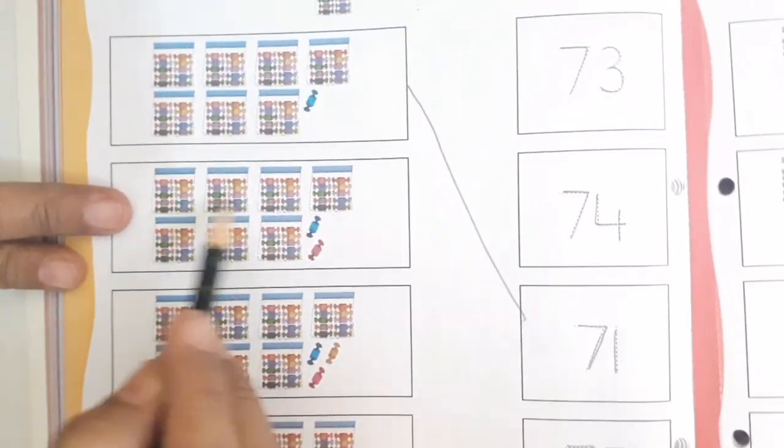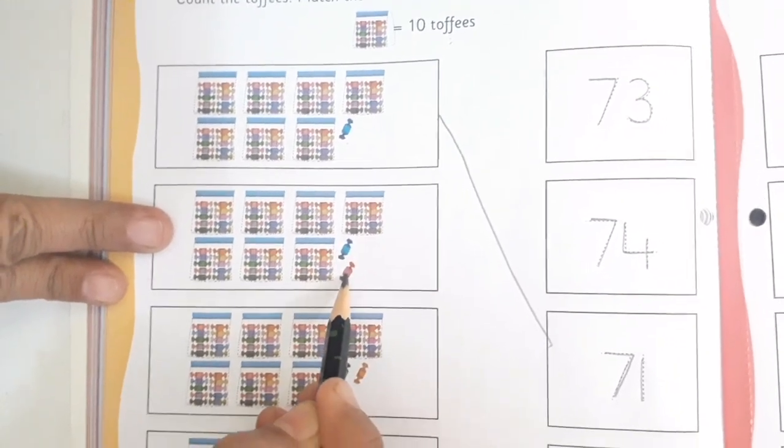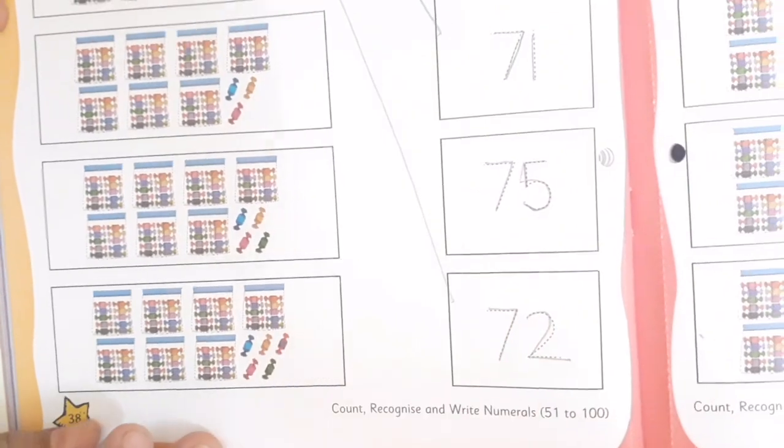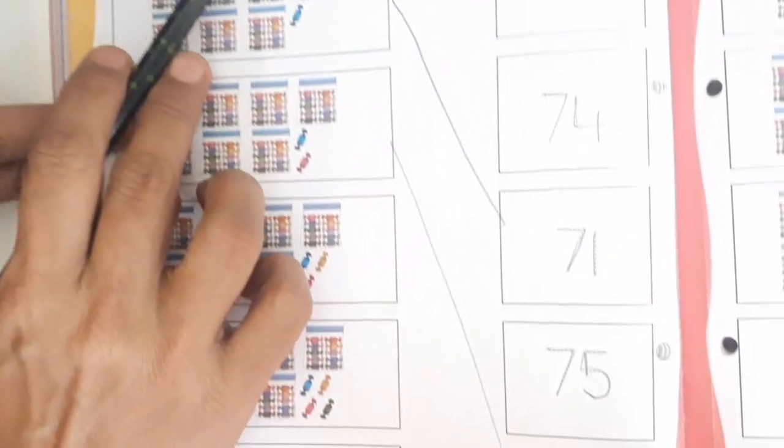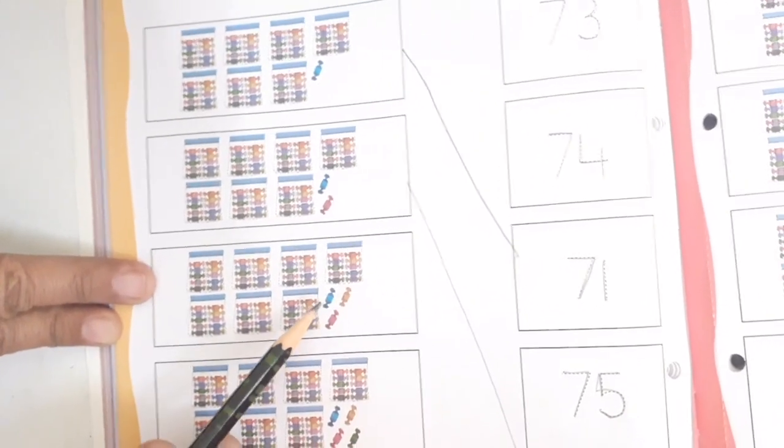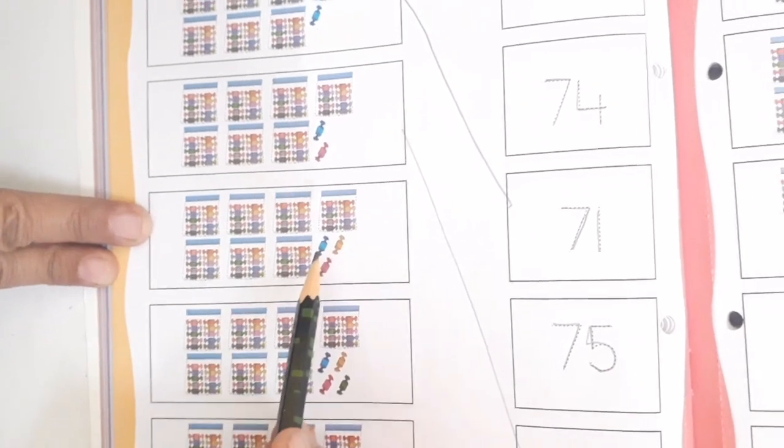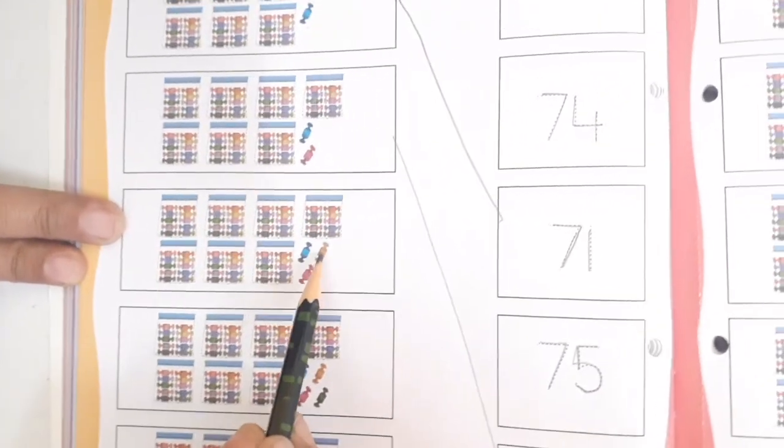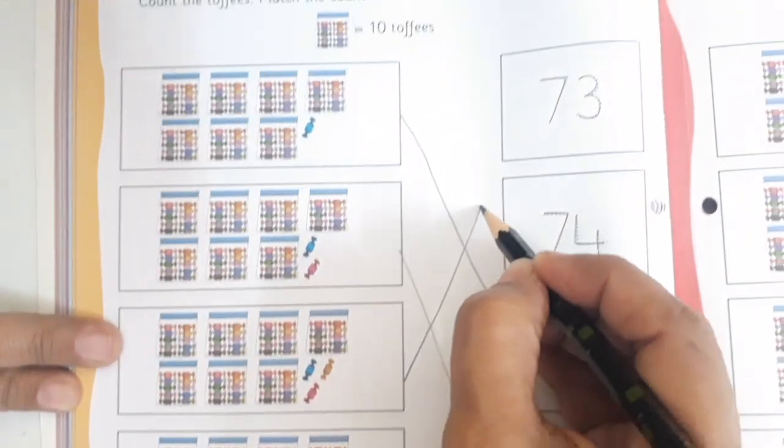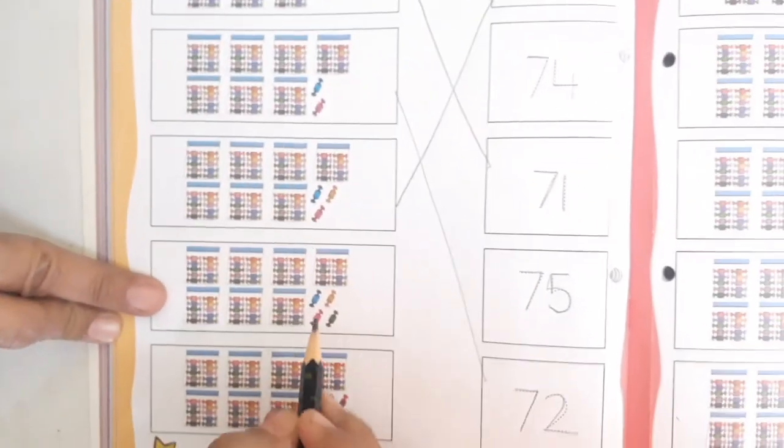Now once again, these are 70 packets and 2 more. So 71, 72. So we are going to draw. Now we are going to match the count with the numeral. Now here again, 70 packets are there. And 1, 2, and 3 more chocolates are there, so toffees are there. So 71, 72, and 73.